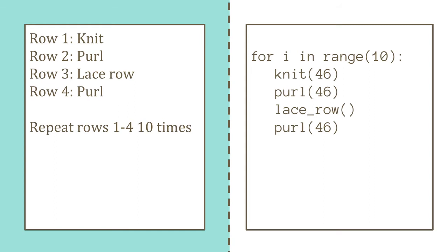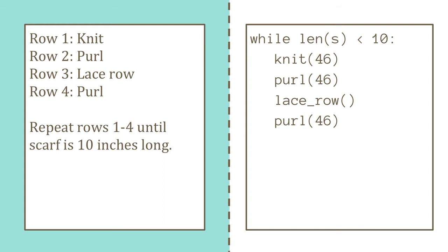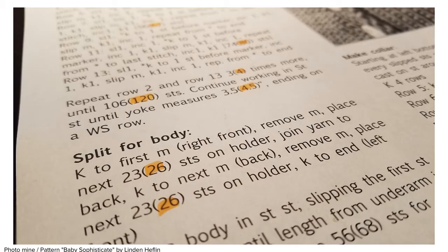They also save on space by including loops. My lace patterns will tell me to repeat a bit of lace a certain number of times, while many of my sock patterns tell me to keep knitting until the leg part is a certain length. Sounds like counting and conditional loops, right?